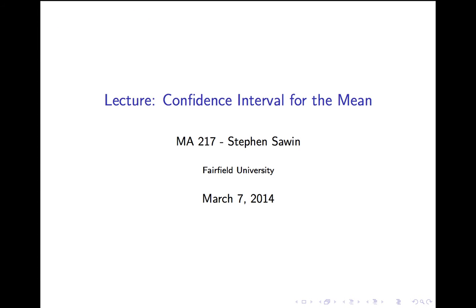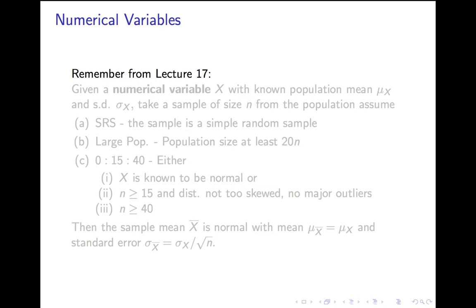This is the lecture on confidence intervals to estimate a population mean. This is going to be very closely analogous with the last lecture estimating the population proportion with a confidence interval, but instead of being based on lecture 16, this is based on what we learned in lecture 17, which I'll review.